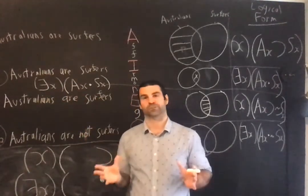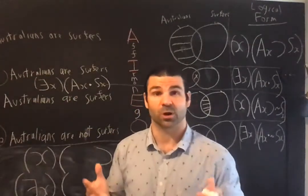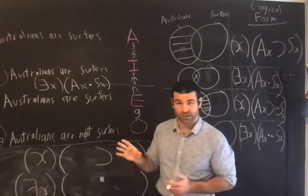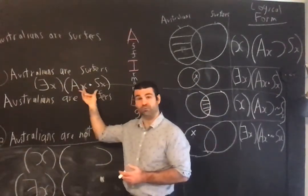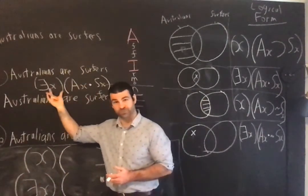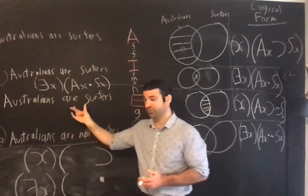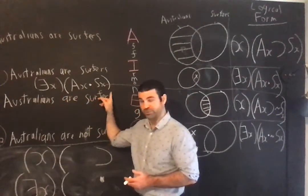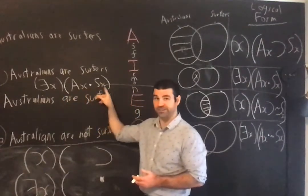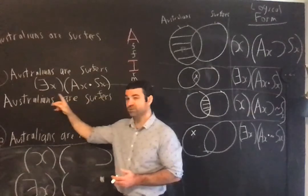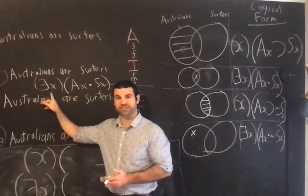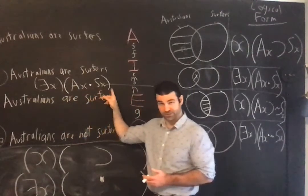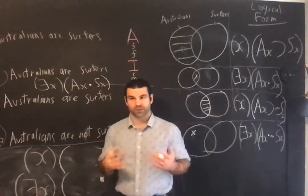What are quantifier statements? Quantifier statements are statements that tell you of how many things a certain propositional function is true. Now, the propositional function of which I'm saying there is at least one of them for which the propositional function is true is here: the whole complex propositional function AX and SX. I read this as: there exists X such that both X is Australian and X is a surfer.